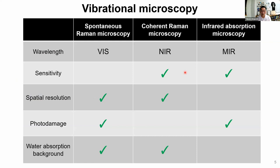Let's start with vibrational microscopy and see what kinds exist. There are three kinds: spontaneous Raman microscopy, coherent Raman microscopy, and infrared absorption microscopy. There are pros and cons. If you think about using those microscopes for cell measurement, most people use spontaneous Raman and coherent Raman microscopy, because you can get higher spatial resolution with visible or near-infrared light.